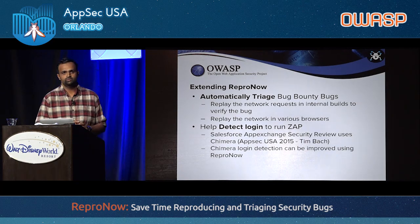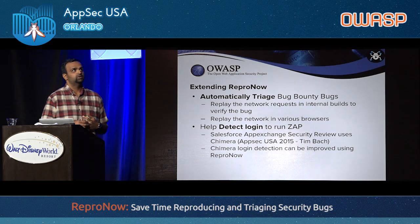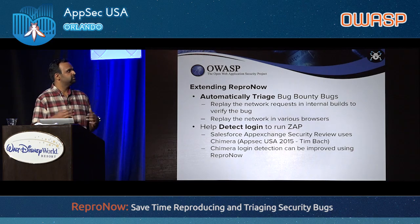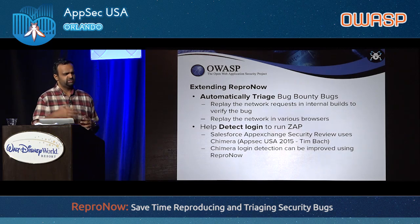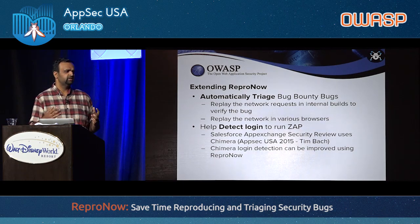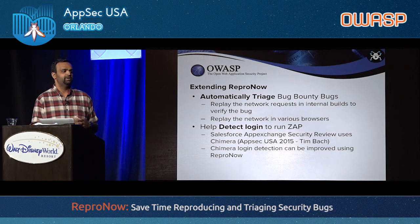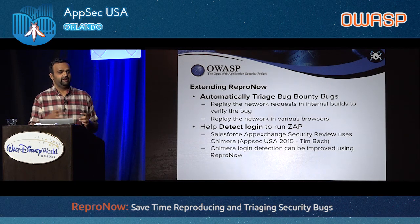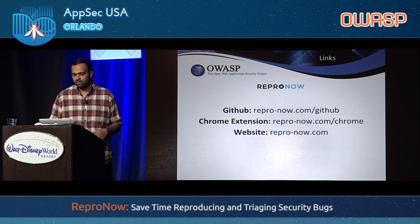There are a couple of things we're thinking about for ReproNow. One is automatically triaging security bugs: since we have the network request, you can replay it in internal builds to check if it's already fixed or if it works across browsers — e.g., if the researcher tested in Chrome, you can check IE automatically. Also, many companies run ZAP on internal builds, but ZAP doesn't do a good job detecting login pages, especially OAuth or XHR-based logins. You could use ReproNow to capture the request, replay it, and feed the session ID to ZAP.